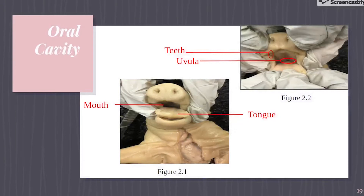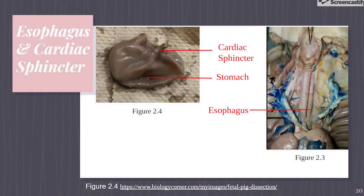After it is broken down, the tongue — also pictured in Figure 2.1 — pushes the food down the esophagus. Once the food has entered the esophagus, pictured in Figure 2.3, it is pushed down to the stomach by peristalsis. The circular and longitudinal muscles in the esophagus contract to push the bolus down the esophagus involuntarily.